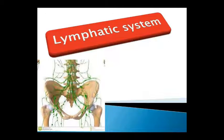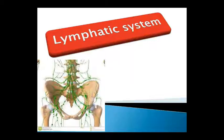Good morning class, this is our anatomy and physiology class. Today we will start our new chapter, the lymphatic system. In our previous classes we completed the sensory organ and sensory system of the body — the eye and ENT. The eye and ENT chapter is now complete.